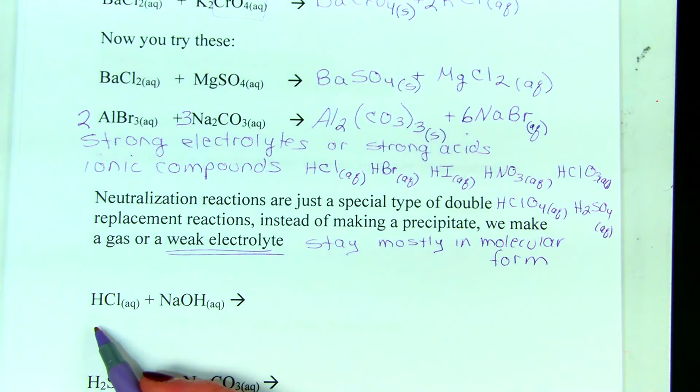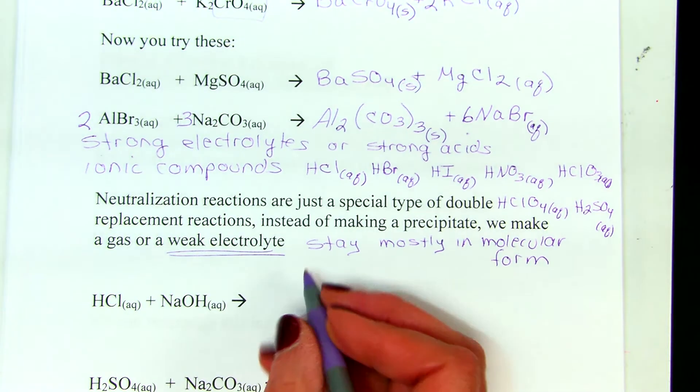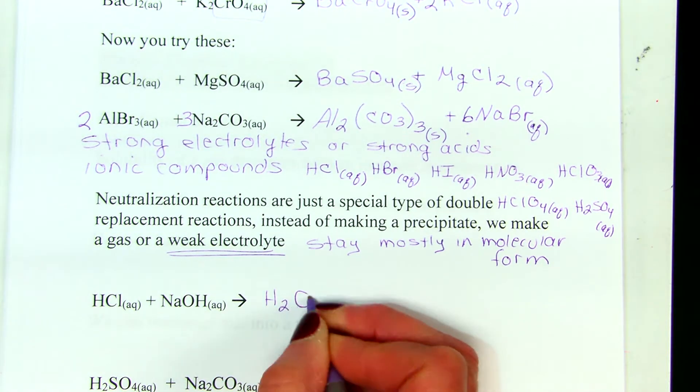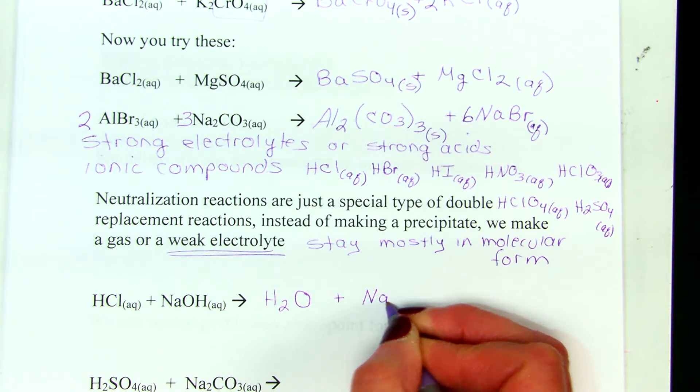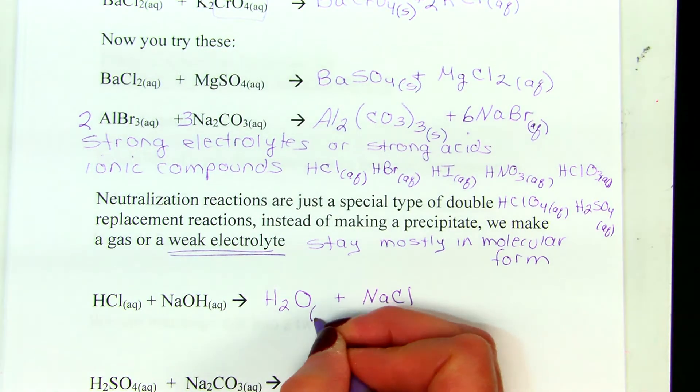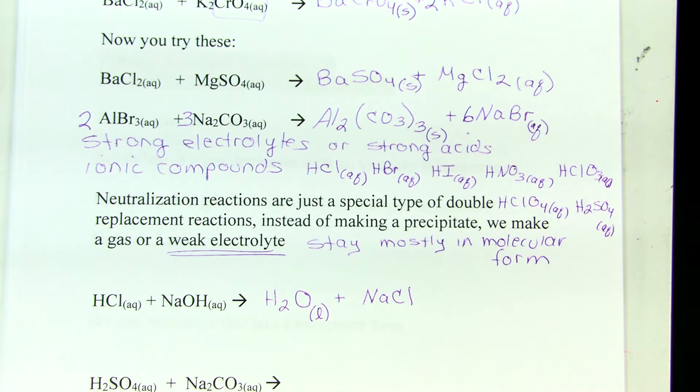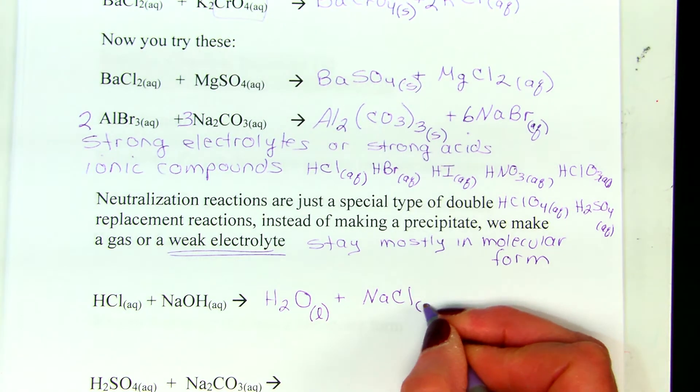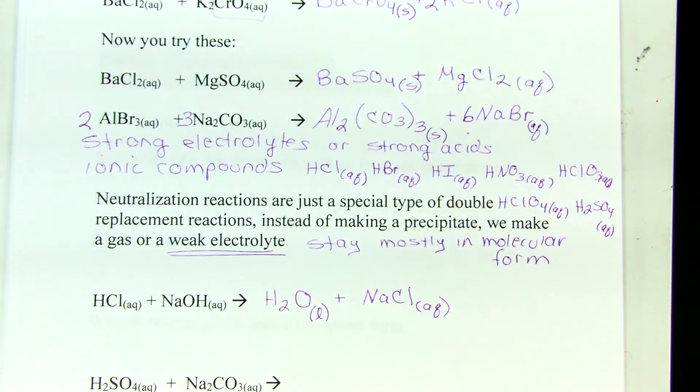HCl. That's a strong electrolyte. It breaks apart completely, so we write it as aqueous. Plus, sodium hydroxide gives us water when we trade partners. Plus, sodium chloride. So, now, we don't have any solubility rule for water, because does water dissolve in itself? I mean, water is water. So, water gets the liquid, the L liquid subscript. Sodium chloride. Sodium makes things dissolve, so it gets an AQ subscript. And we look at this one and check, this is already balanced as it is.